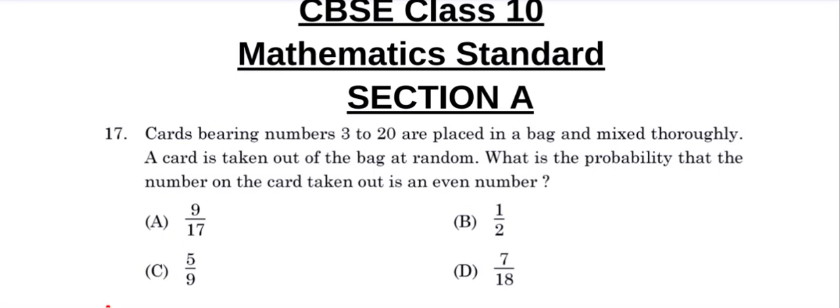Number 17: Cards bearing numbers 3 to 20 are placed in a bag and mixed thoroughly. A card is taken out of the bag at random. What is the probability that the number on the card taken out is an even number?